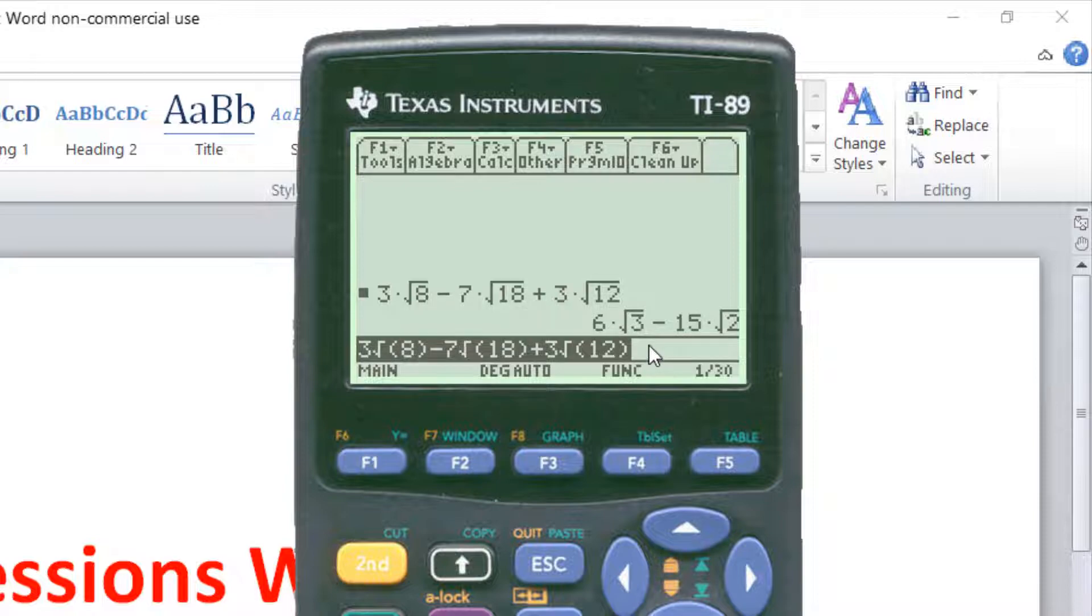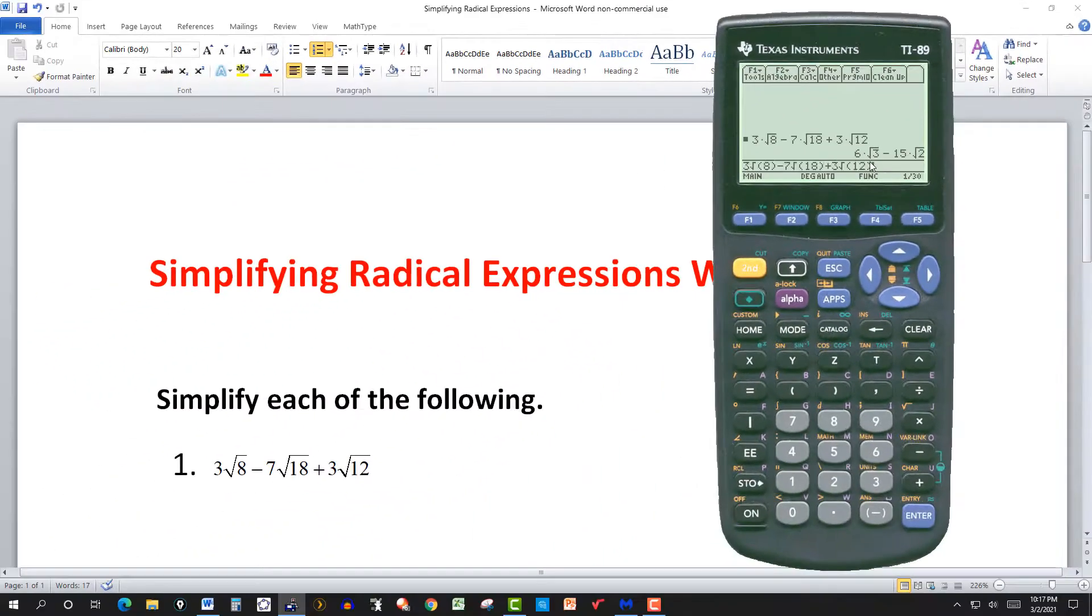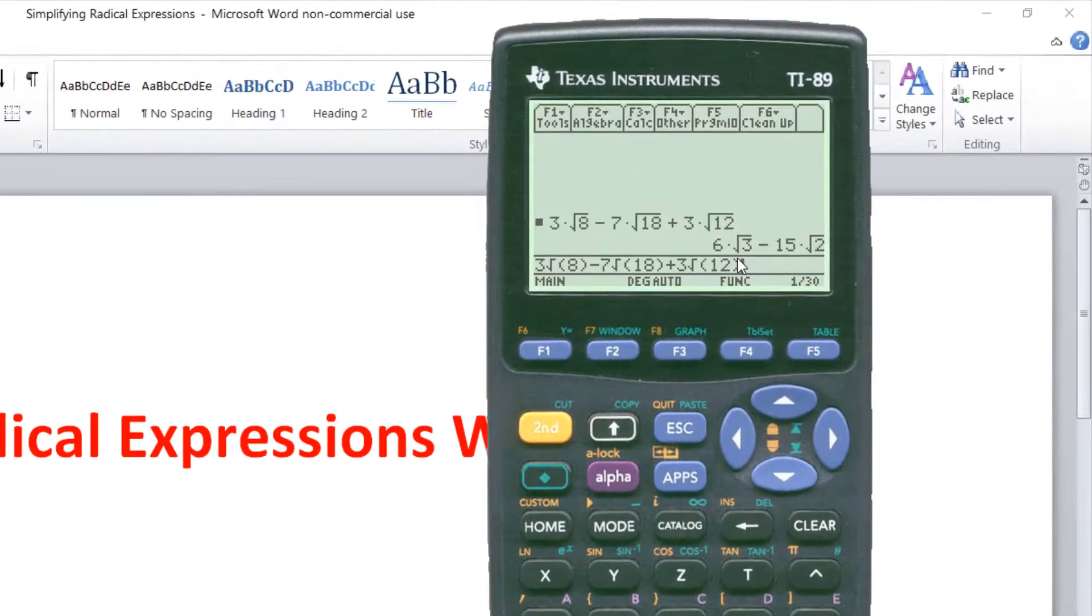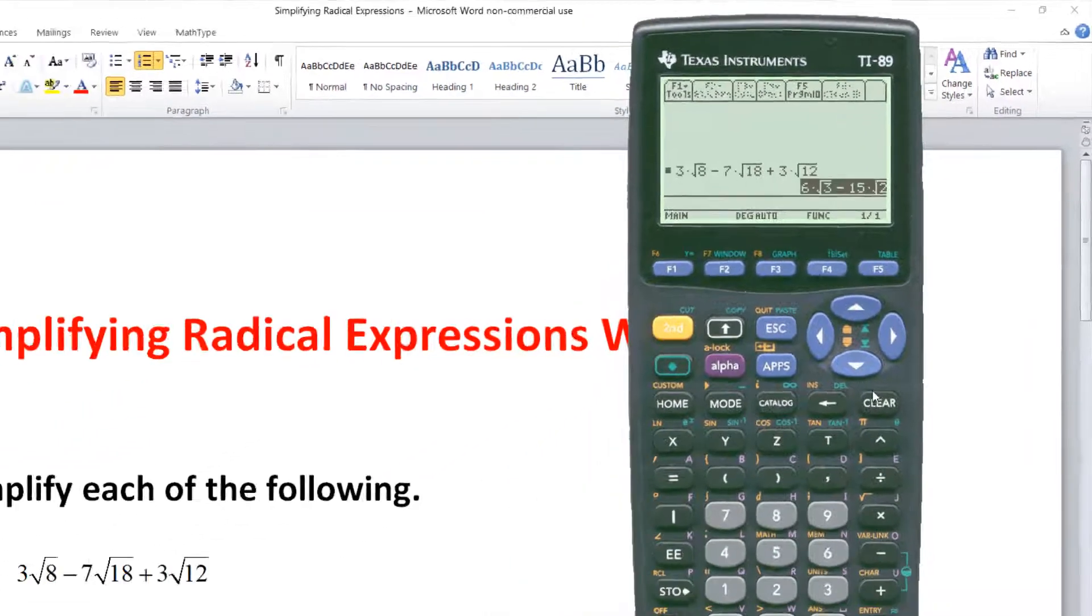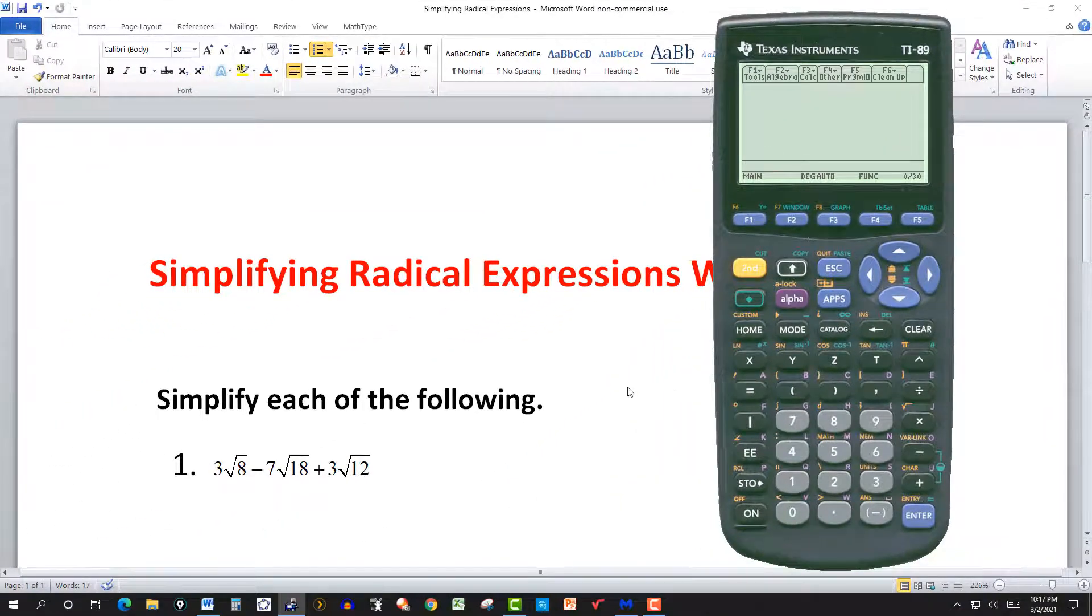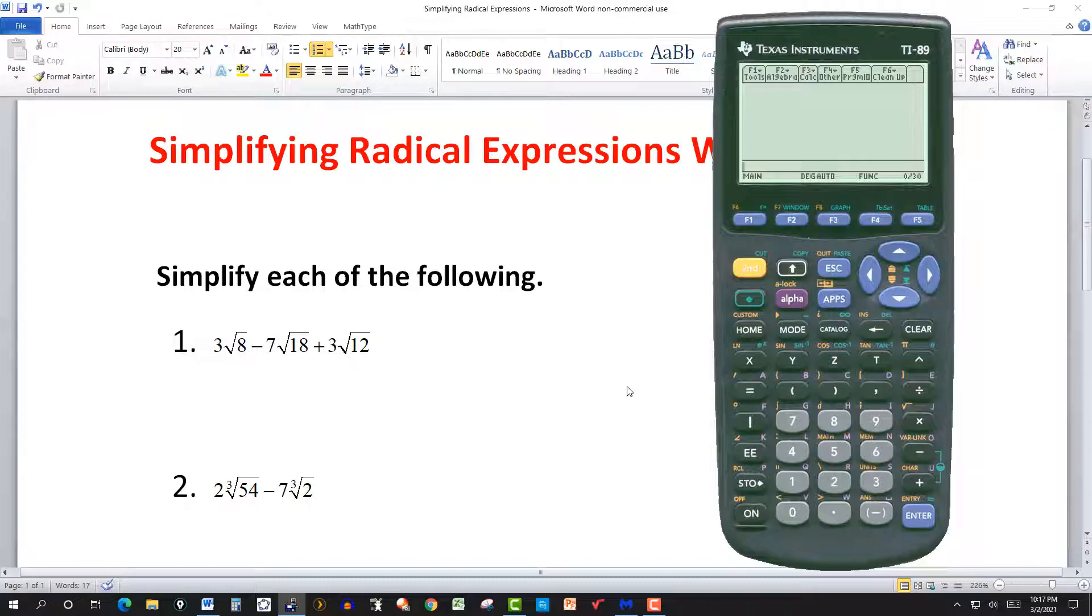And there we have it. We have 6 square root of 3 times the square root of 3 minus 15 times the square root of 2. We can't combine any further. Let's take these. Go to the next one.